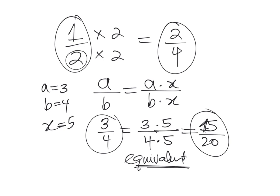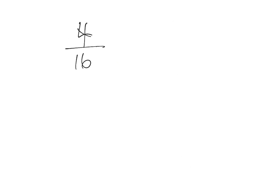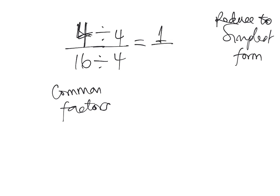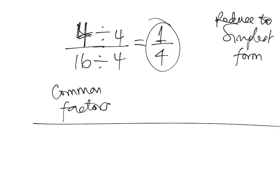To reduce a fraction — or simplify it — you divide both numerator and denominator by what they have in common. Take 4/16: they share a common factor of 4. Dividing both by 4 gives 1/4. So 1/4 is the same as 4/16 — you've reduced 4/16 to its simplest form, or lowest terms. That's how you create a simplified equivalent fraction.